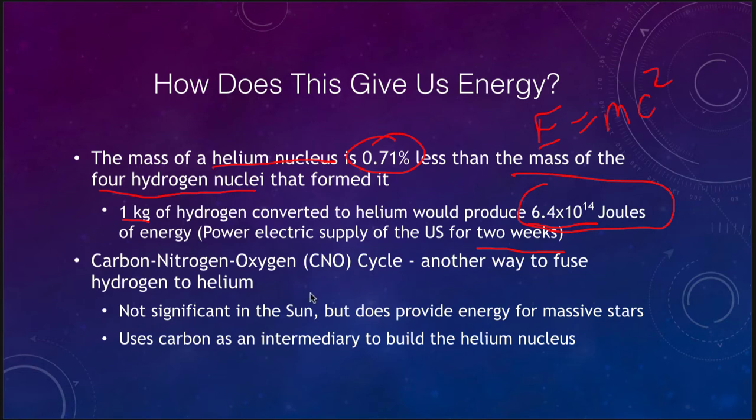There is another cycle that's used for more massive stars we call the CNO or the carbon nitrogen oxygen cycle. It is not significant in things like the sun, but it does provide energy for more massive stars and uses carbon as an intermediary to build the helium nucleus. Essentially you start off with a carbon nucleus and add protons to it and build into nitrogen and then into oxygen. When you get to a certain point it splits off the helium nucleus and you have the same net process as the proton proton chain. You're converting four hydrogen nuclei into one helium nucleus and the carbon comes back to start the process again. The carbon is just used as the catalyst.